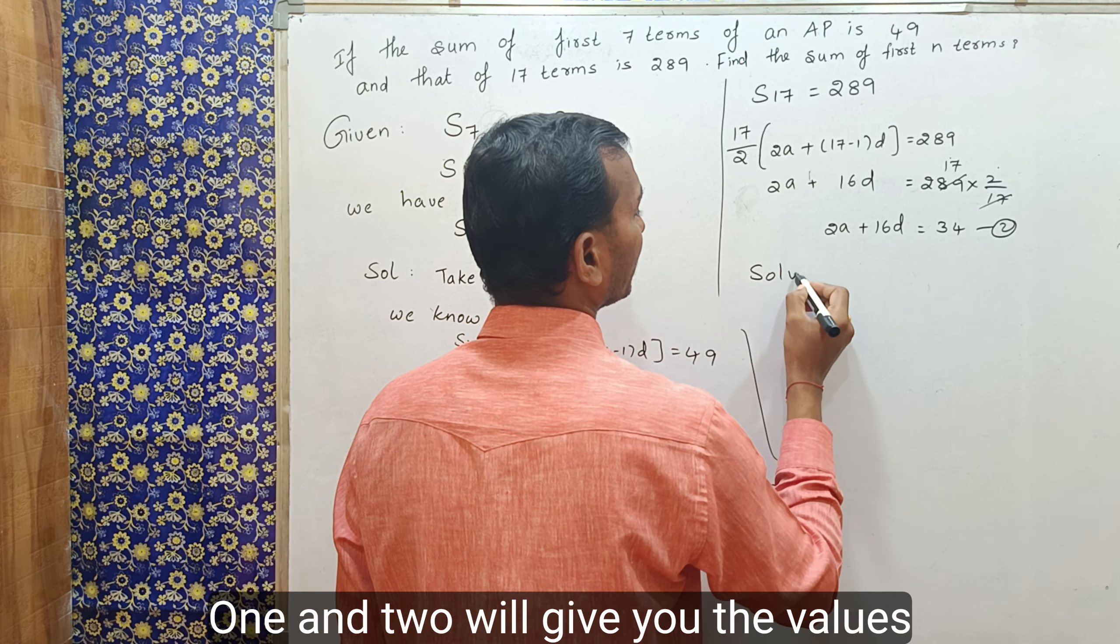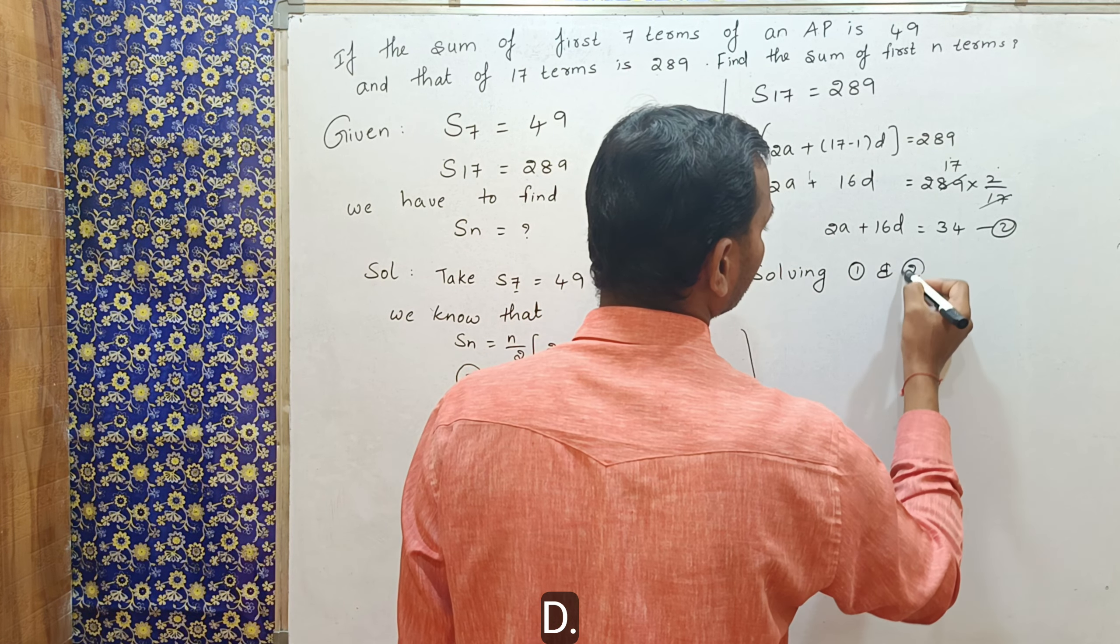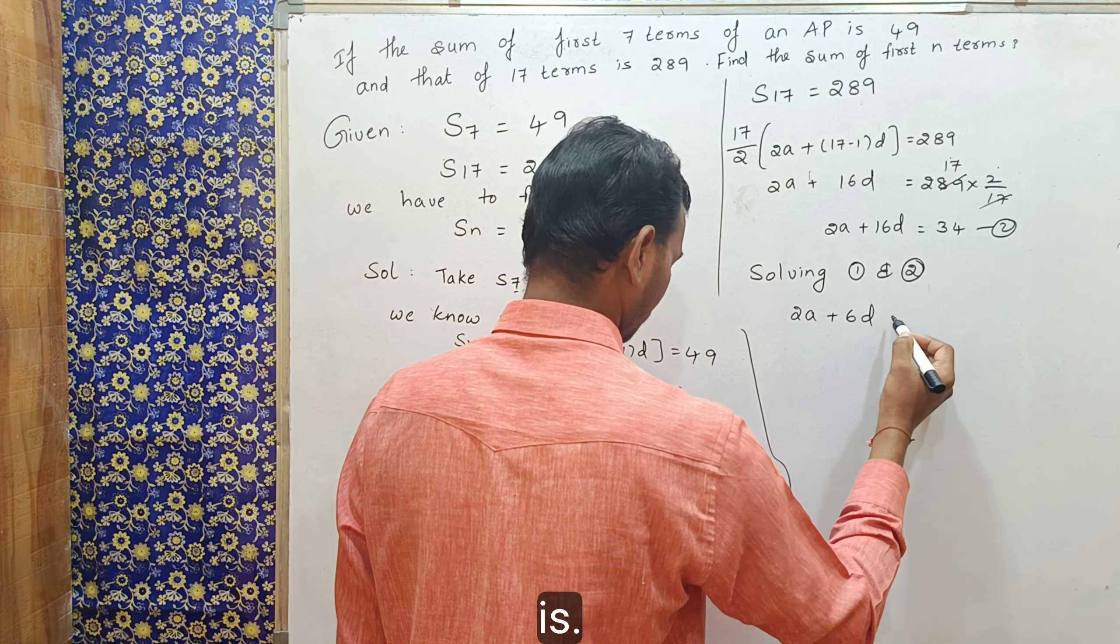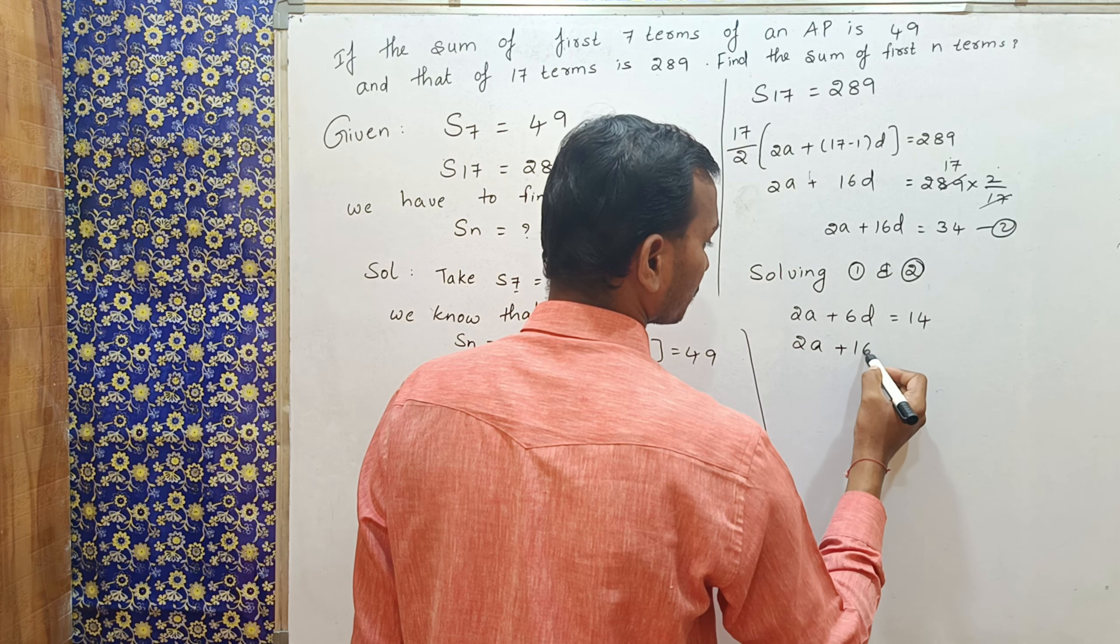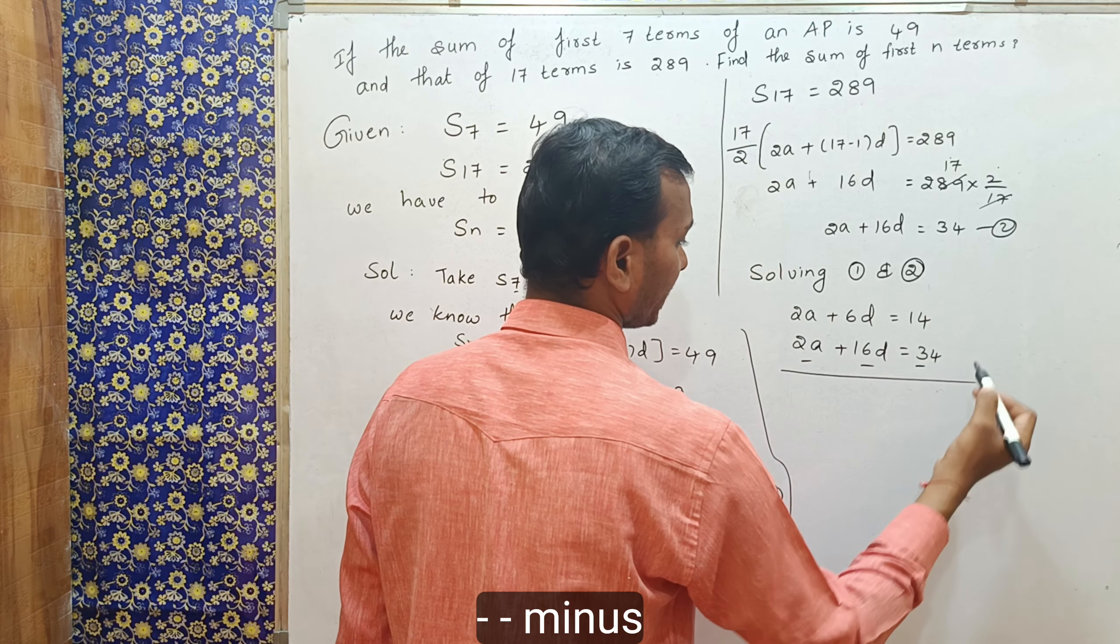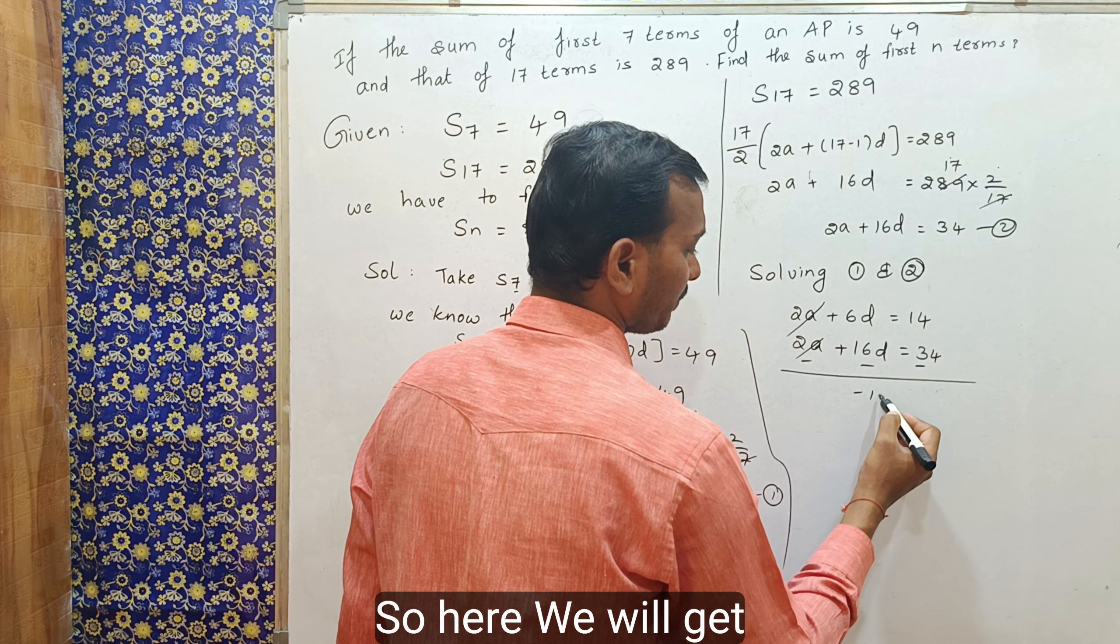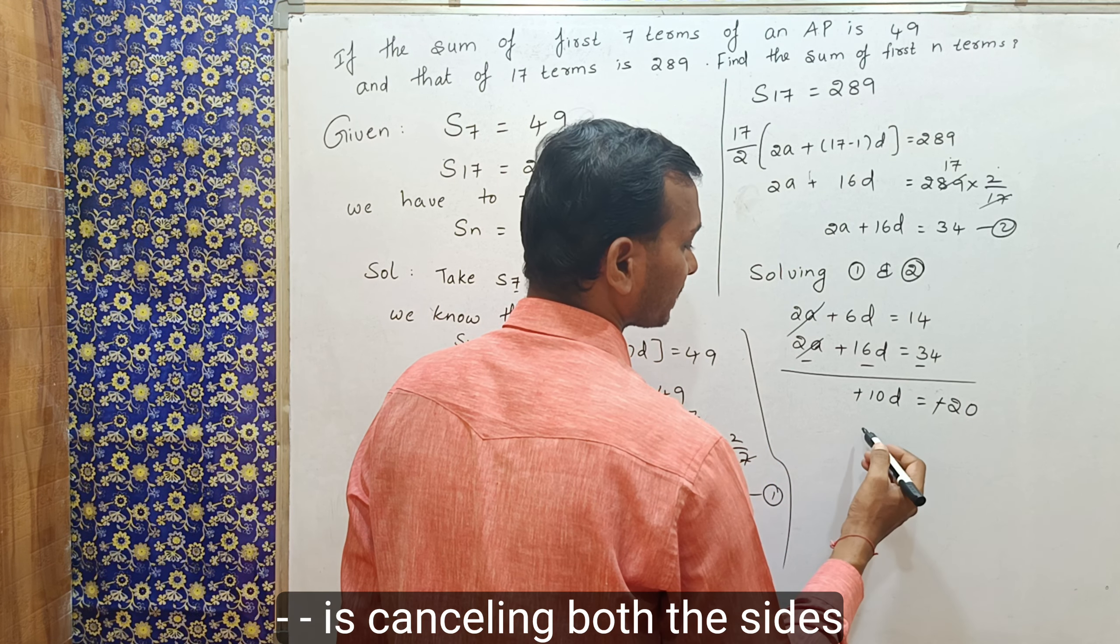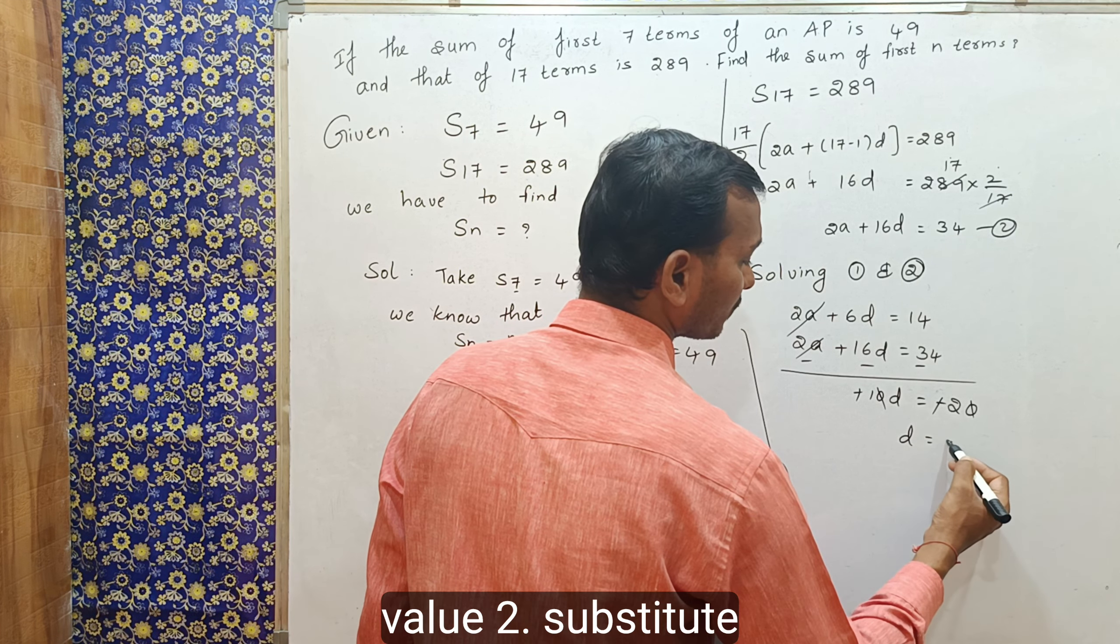Solving 1 and 2 will give you the values of a and d. Minus, minus, minus. So, both gets cancelled. So, here, we will get minus 10d. Here is nothing but minus 20. Minus, minus is cancelled on both the sides. 10d is equal to 20. So, we are getting d value 2.